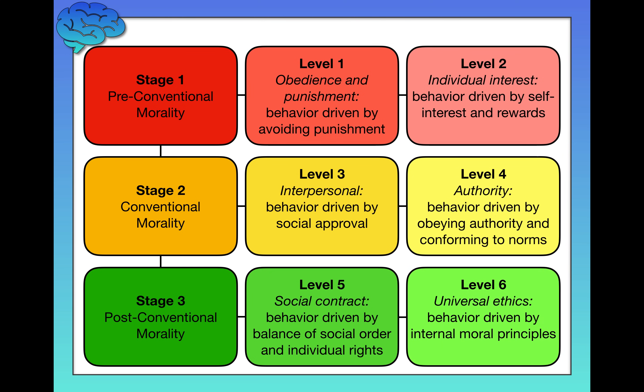Finally, we get to Level 6. Very few people make it this far, so if you were thinking on this level, congratulations — universal ethics. Here, behavior is driven by internal moral principles. This involves weighing two conflicting principles: it's wrong to steal, but people have the right to live and be healthy. Universal ethics means reasoning that his wife's right to live is far more important than the druggist's right to make more money or to his property — the importance of life is at a higher level than the importance of property. Therefore, yes, he should have stolen the drug.